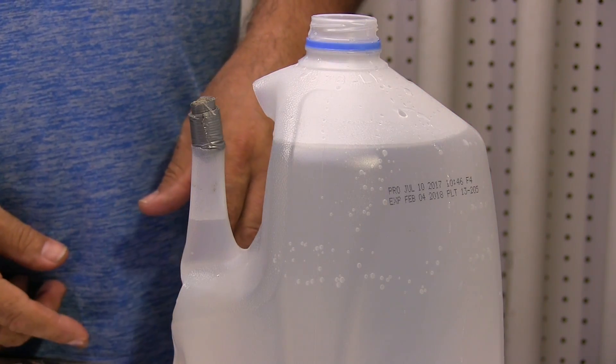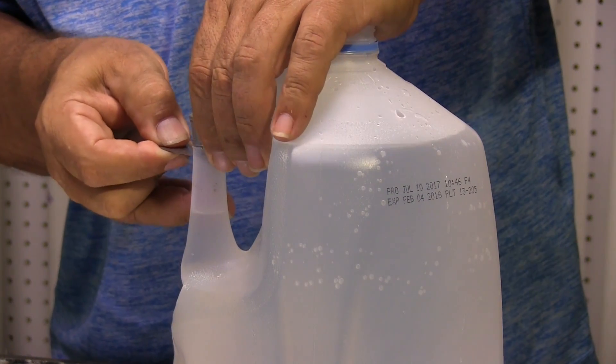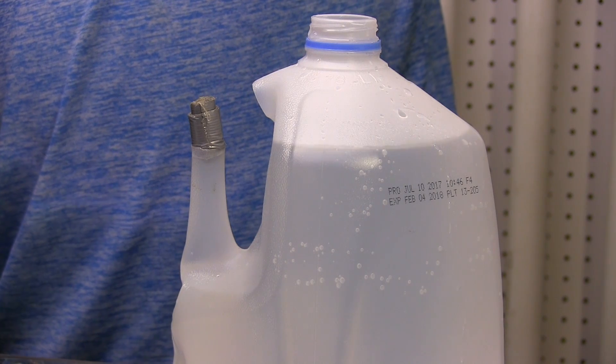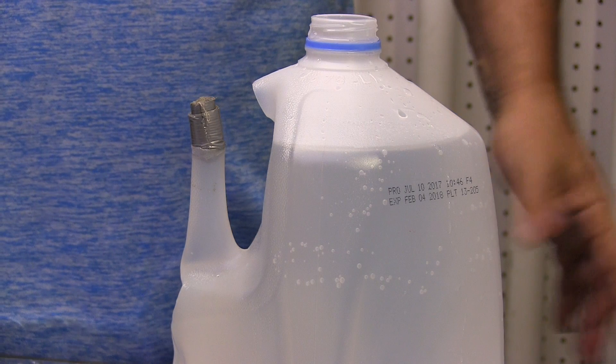So what you need is a vent. Just cutting a little hole in here, a little vent hole, allows things to fill up. It would allow that argon to completely displace the air and allow you to get a good purge.